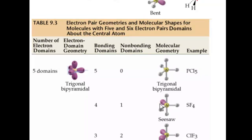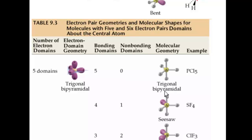A lone pair would be an example like where there's one lone pair sticking out with one lone pair and four single bonds. In this case, there are five bonding domains, or five single bonds. Therefore, the electron domain — electron pair geometry — is trigonal bipyramidal, and because there are no lone pairs or non-bonding electrons around the central atom, the molecular geometry is also trigonal bipyramidal.